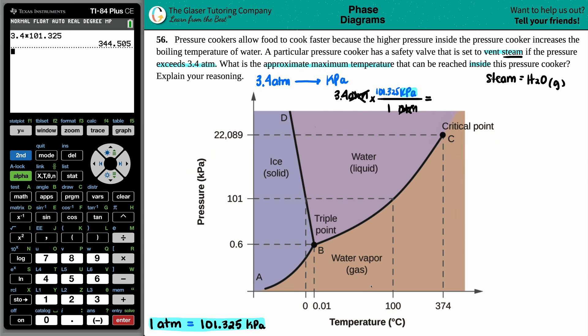So that's what I'll do: 3.4 times 101.325, and numbers look good. Okay, so my kilopascals is now 344.5, roughly kilopascals. If we wanted sig figs, since this had two sig figs, I guess let's do the sig fig game, right? So we would have 340 kilopascals.